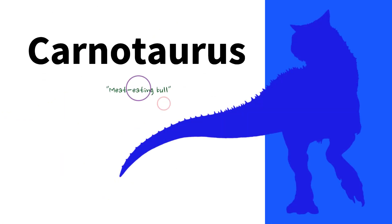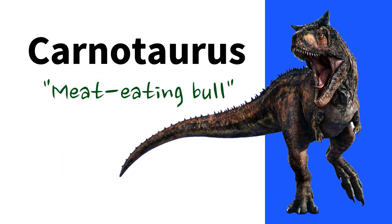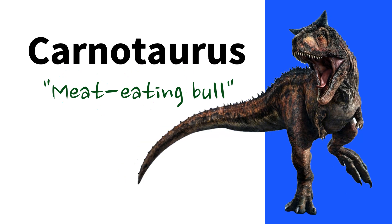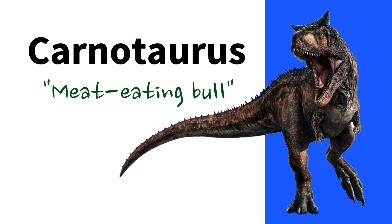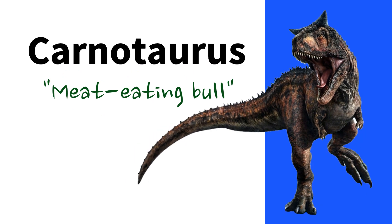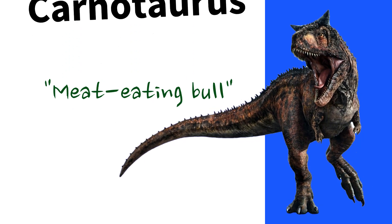Carnotaurus. Meat-eating bull. This name refers to the dinosaur's predatory nature and bull-like horns above its eyes.